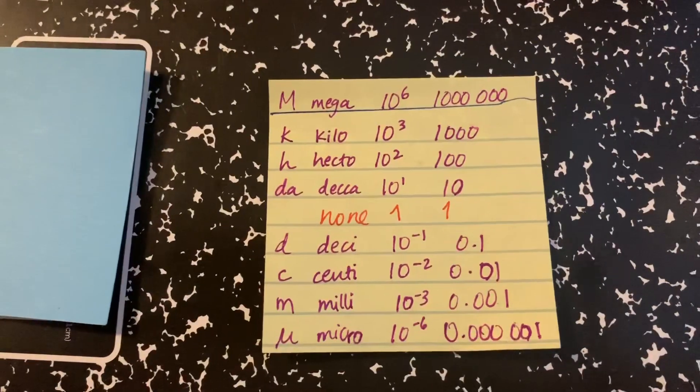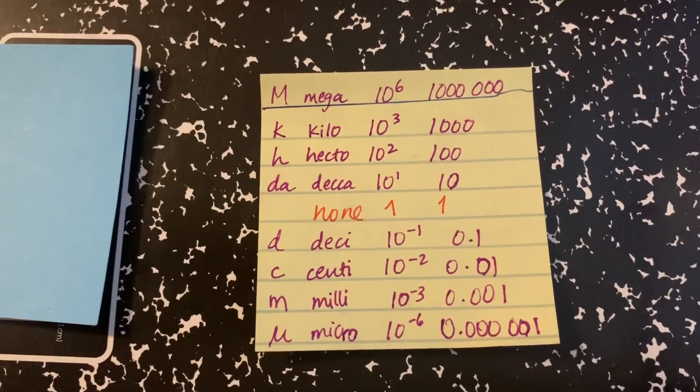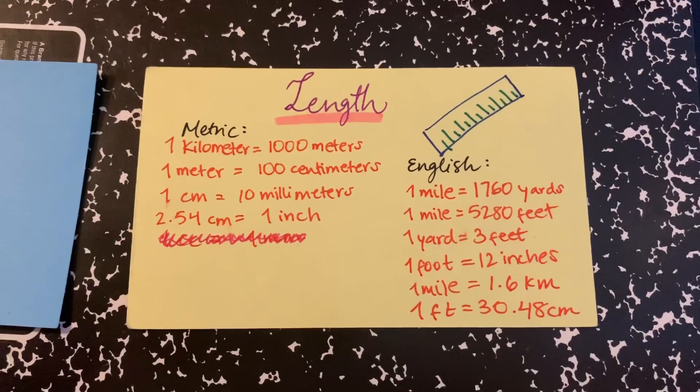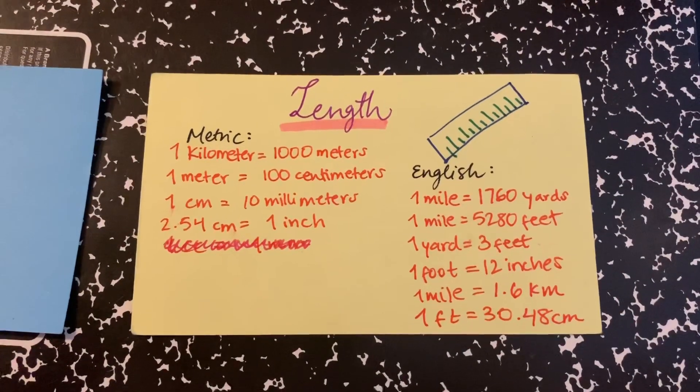So this is very helpful to know because it gets easier. So the first system we're looking at is the length system, and there are two different types, the metric system and the English system.